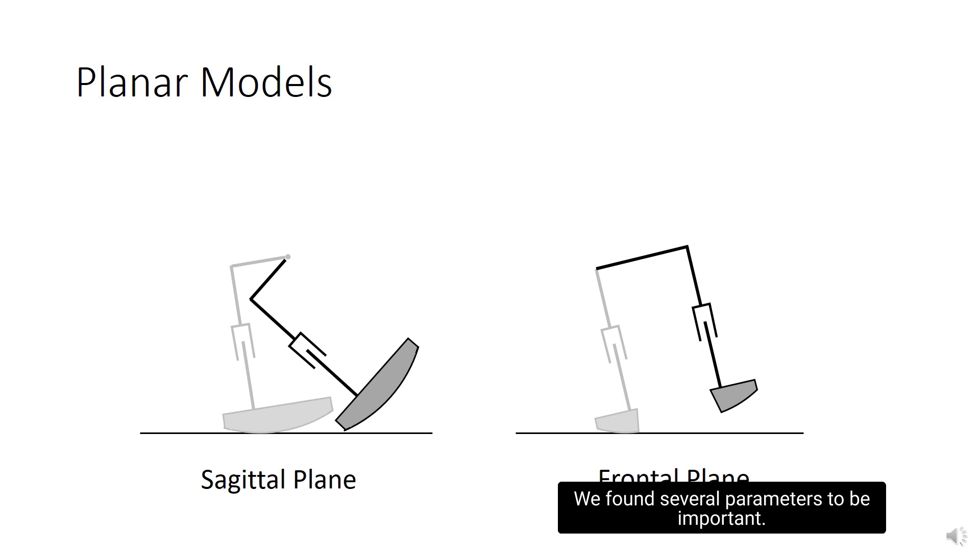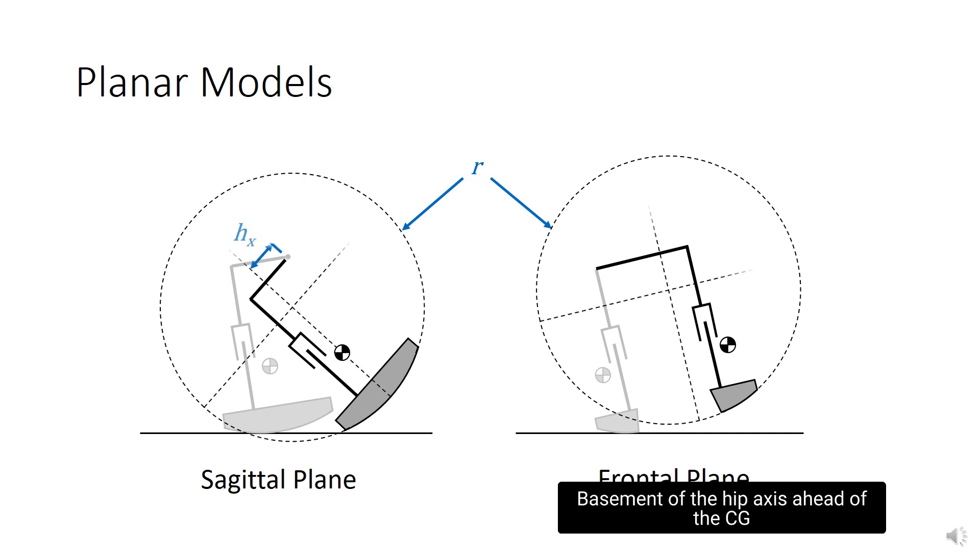We found several parameters to be important. A center of gravity below the radius of the hemispherical feet keeps the robot statically stable in its standing posture. Placement of the hip axis ahead of the CG when standing produces forward walking.